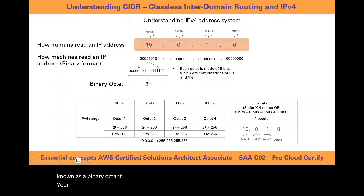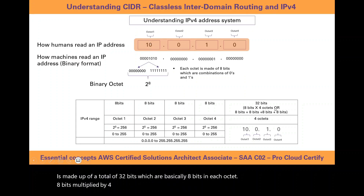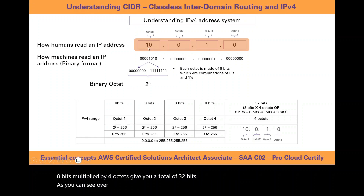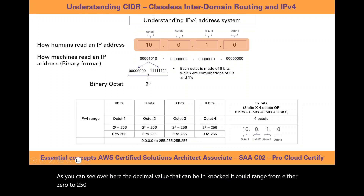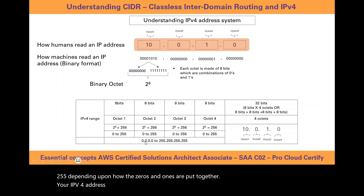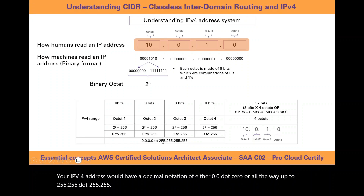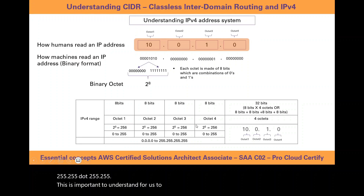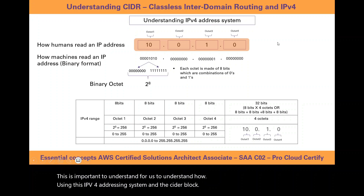The decimal value in each octet can range from 0 to 255, depending on how the zeros and ones are arranged. Your IPv4 address can range from 0.0.0.0 all the way up to 255.255.255.255. This is important for understanding how the IPv4 addressing system and CIDR block notation are used to break up your VPC into subnets.